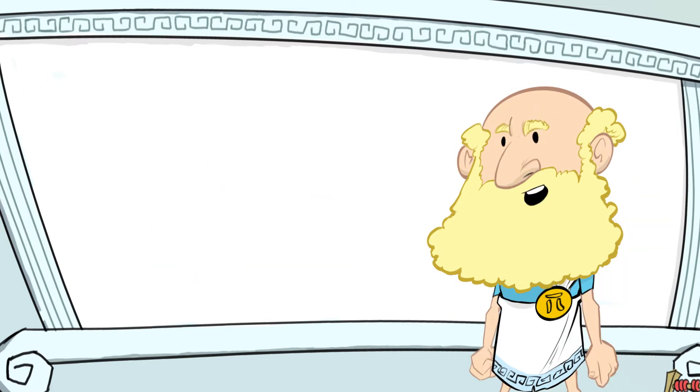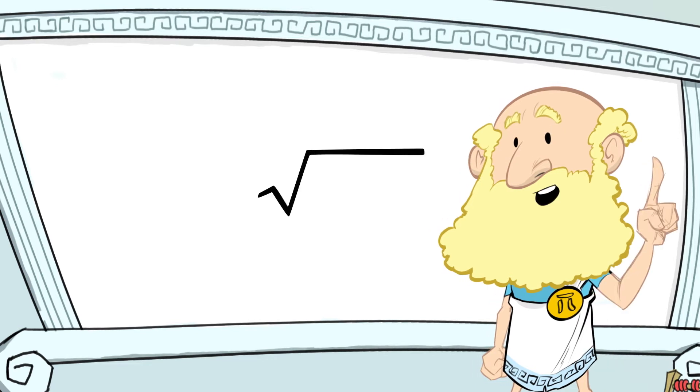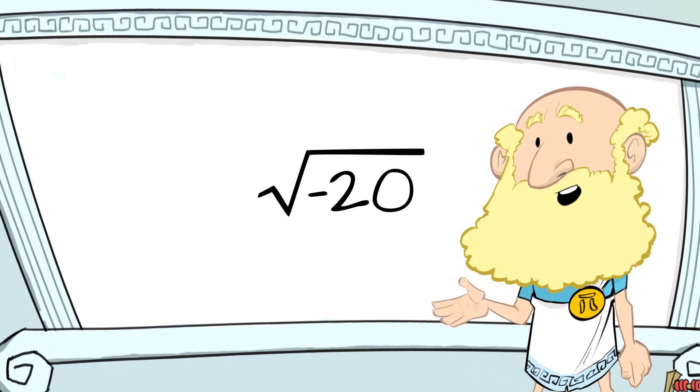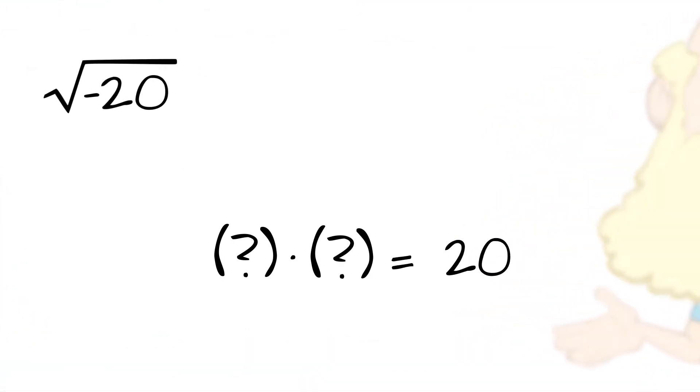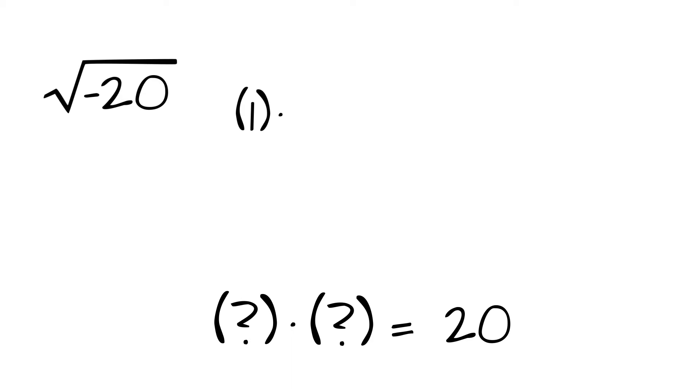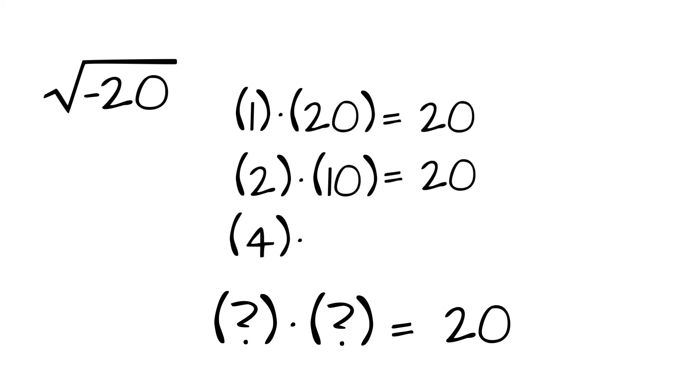Let's look at another example, the square root of negative 20. Remember, when we think about simplifying square roots, we want to think of perfect square factors. In other words, when we think of two whole numbers that have a product of 20, we think of 1 times 20, 2 times 10, and 4 times 5.